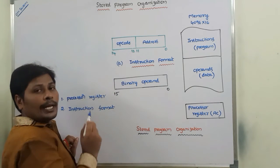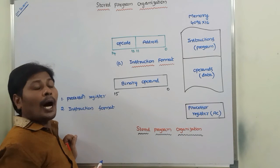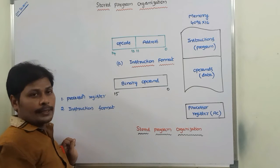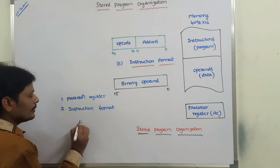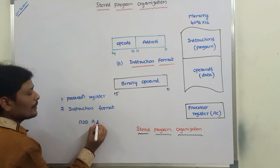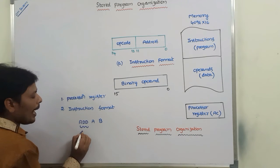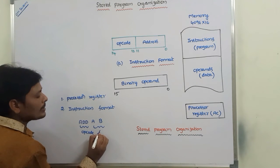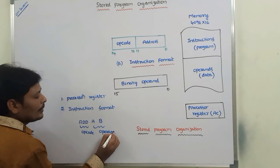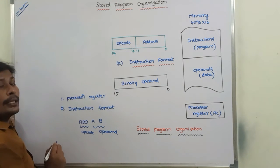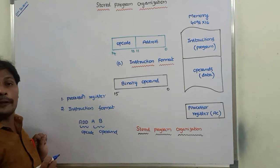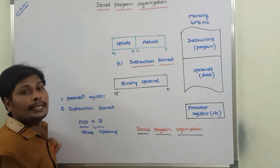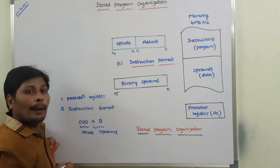To perform the operation specified in the opcode part of the instruction format, we require some operands. For example, ADD A, B — here ADD is called as opcode, and A and B are called as operands. ADD is nothing but the addition operation. We have to perform it on the operands A and B, which are stored either in registers or a memory unit.